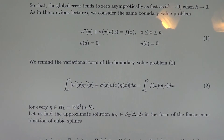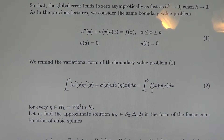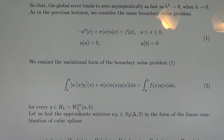This is a standard boundary condition. We remind that the variational form of this boundary value problem is: the integral from A to B of the first derivative of unknown u times the first derivative of test function eta(x), plus sigma·u·eta, equals the integral from A to B of f(x) times eta, for every eta in the energetic space H_L, which in this case is the Sobolev space W⁰₁₂ on the interval (a, b).